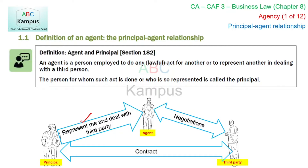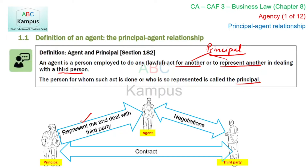An agent is a person employed to do any lawful act for another, or to represent another in dealing with a third person. Normally when someone negotiates a deal, they do it for themselves — but when you do it for someone else, that someone else is the principal. The person for whom such act is done, or who is so represented, is called the principal. So the person representing is the agent, and the person being represented is the principal.